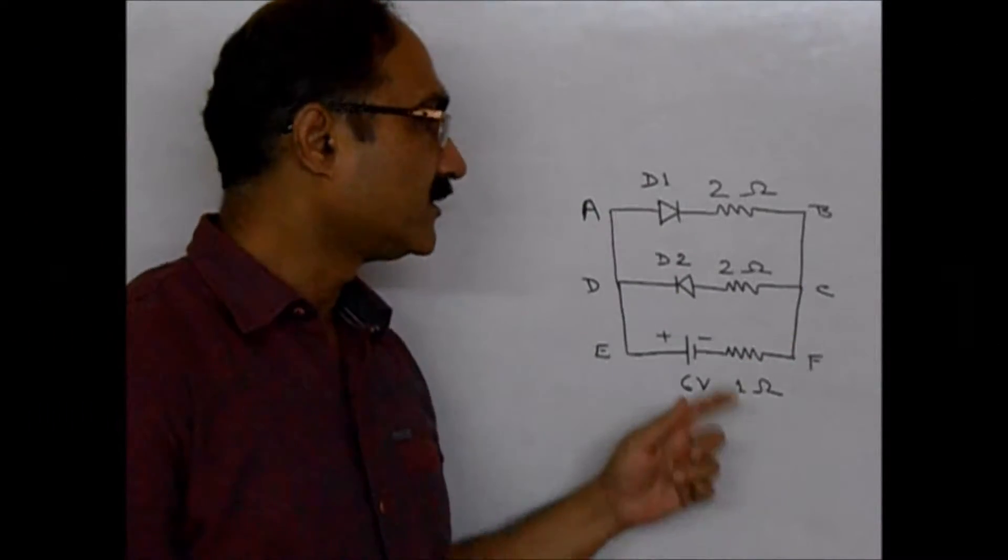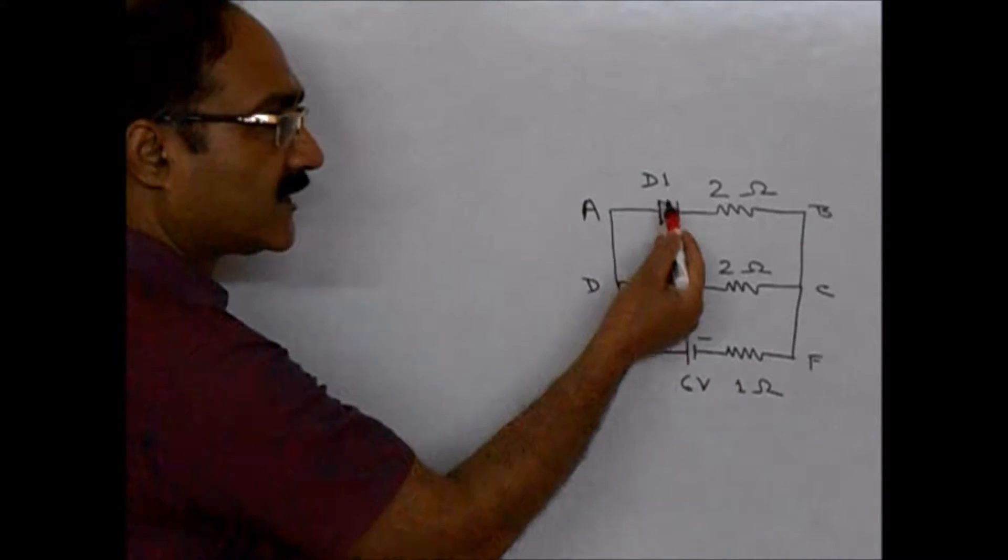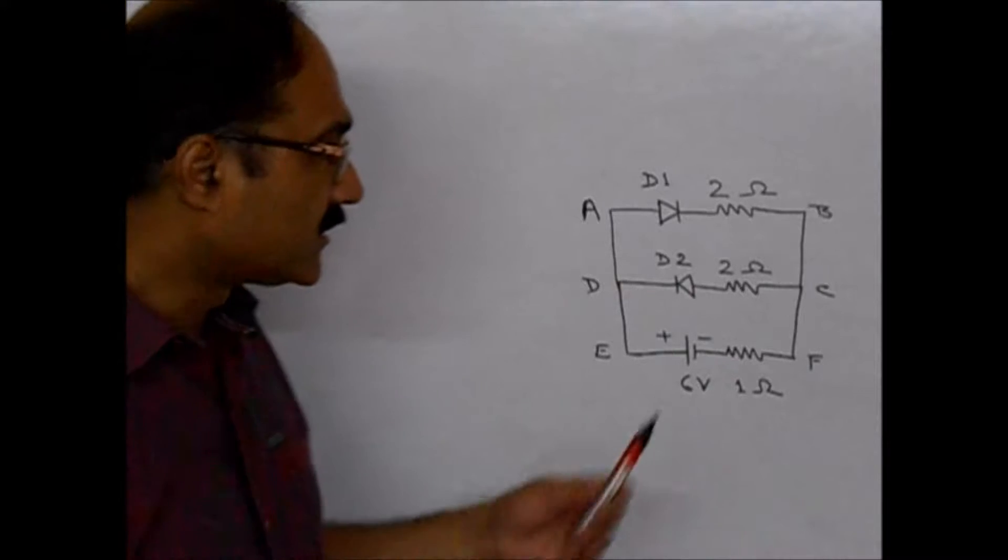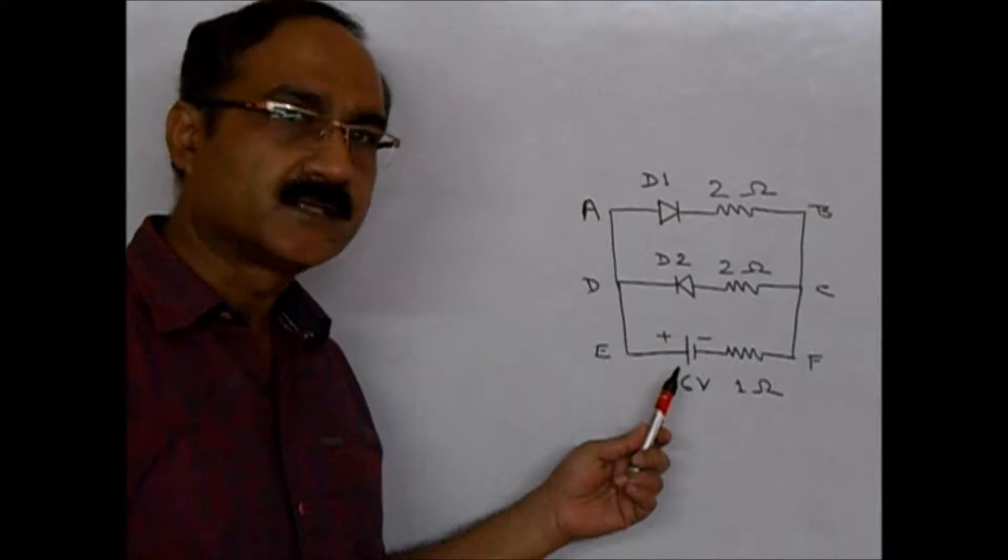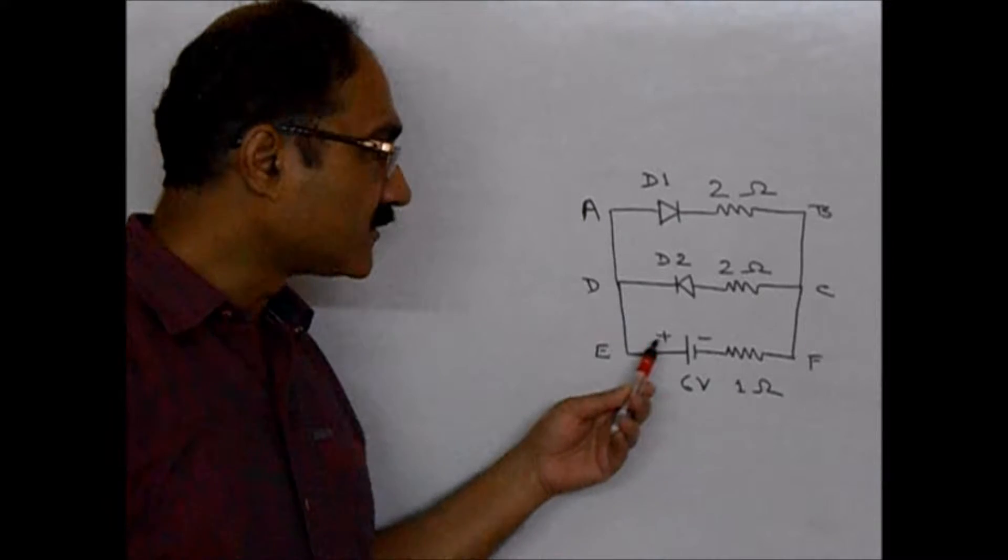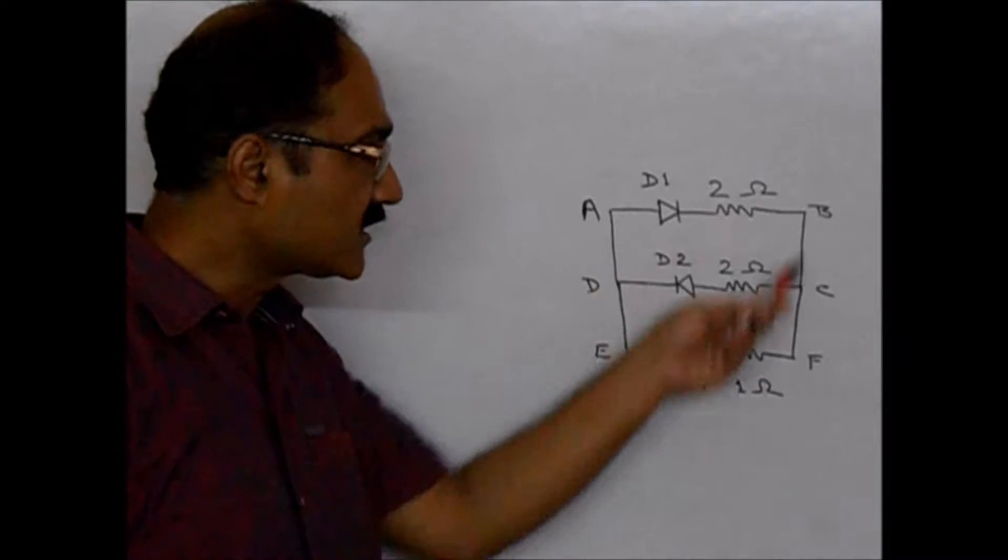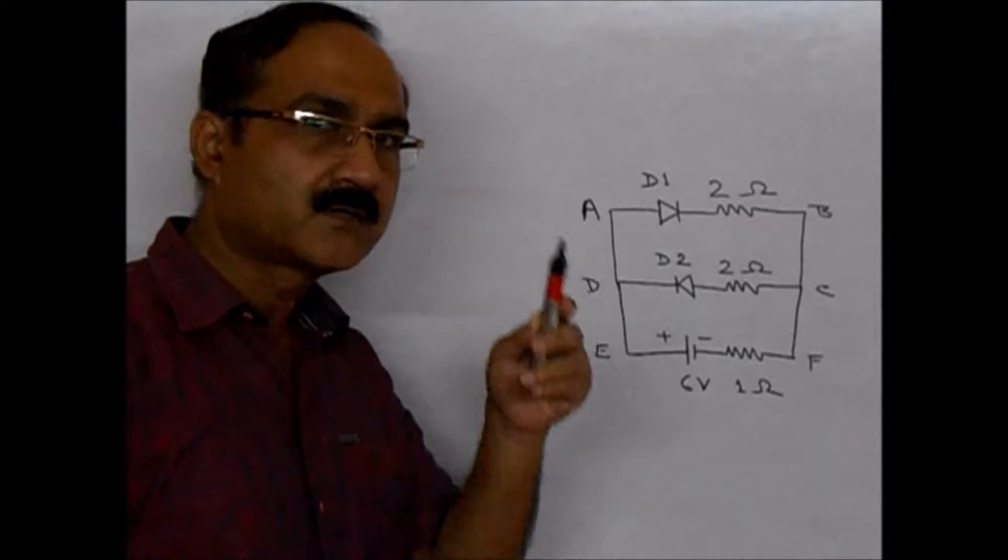The correct solution of this problem is like this. See, there are two diodes, D1 and D2. This is a cell, the DC cell. So this side is positive. So if you look here, for this D1, this side is positive, this side is negative. So this will be forward biased. So current will flow through this.